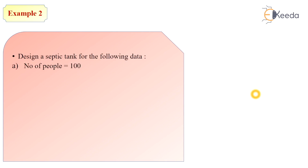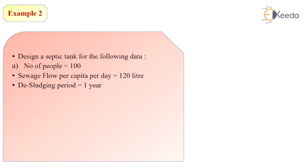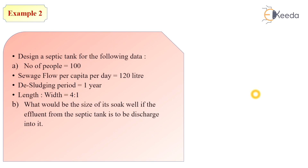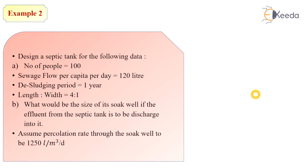Next we see the second example. Design a septic tank for the following data: number of people — 100; sewage flow per capita per day — 120 liters; desludging period — 1 year; length to width ratio — 4 to 1. What would be the size of its soak well if the effluent from the septic tank is to discharge into it? Assume the percolation rate through the soak well is 1250 liters per cubic meter per day.